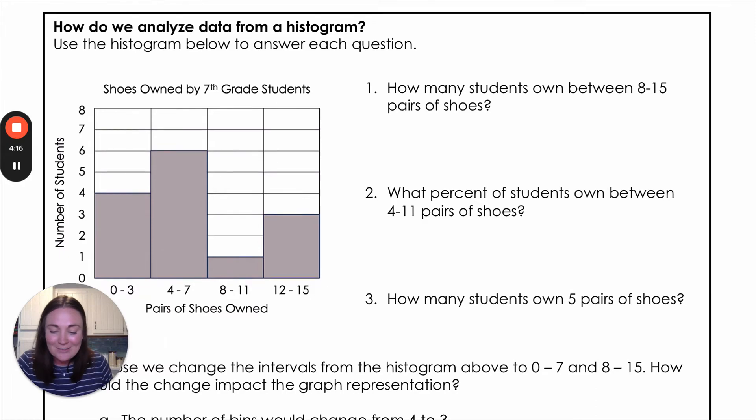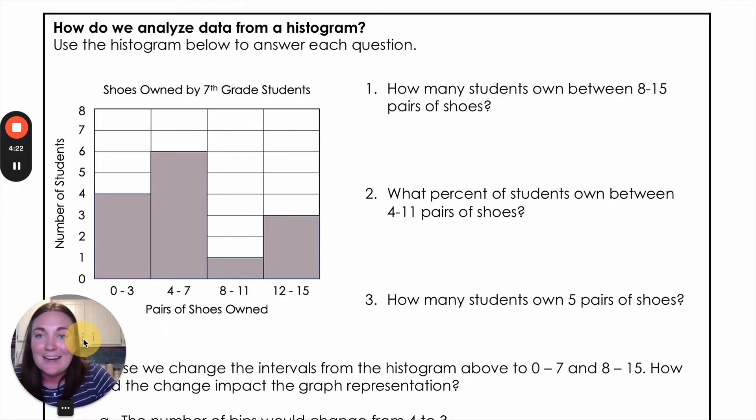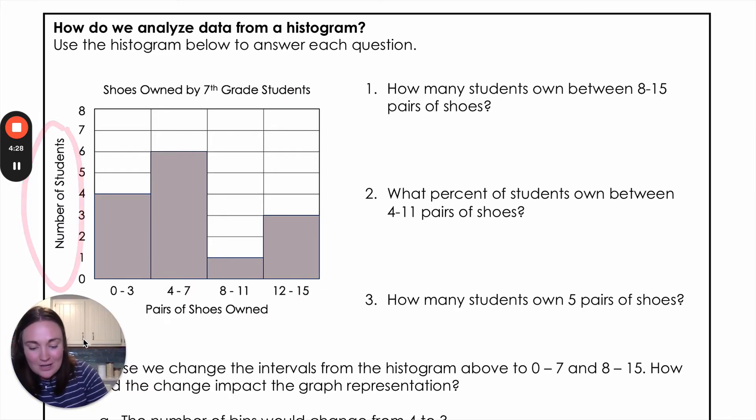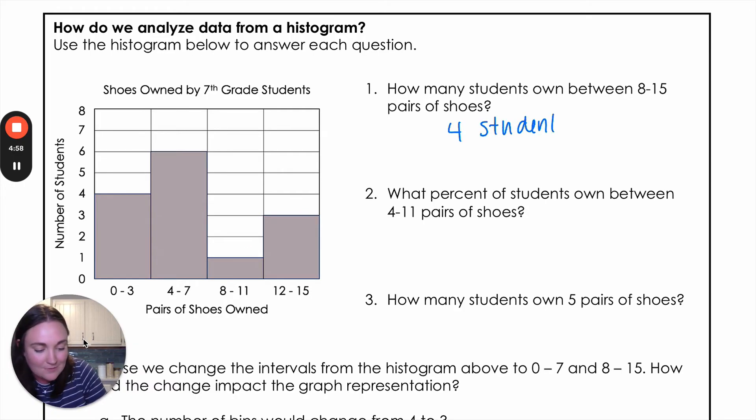Okay, let's look at another example of a histogram and practice answering some of those questions. So let's see here. We've got shoes owned by seventh grade students. So our frequency, our number of students is over here and the pairs of shoes owned is down below. So that means that four students own zero to three pairs of shoes. Six students own four to seven, so on and so forth. All right. Number one, how many students own between eight to 15 pairs of shoes? So if I'm looking from eight to 15, I'm going to combine those two intervals together. So I've got one from the first one and I've got three from the second one. So that is four students that fit that eight to 15 category.